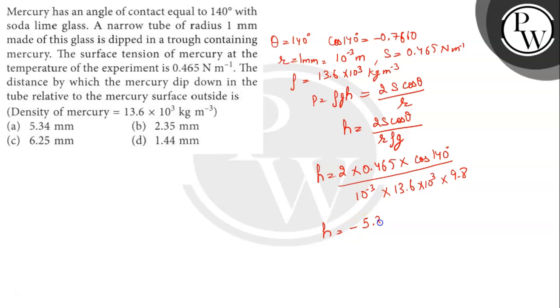When we solve and put in the values, we get minus 5.344 meter. This negative sign shows that the mercury level is depressed.